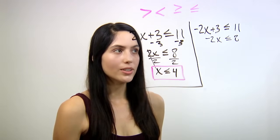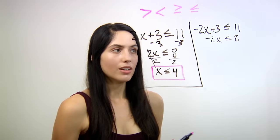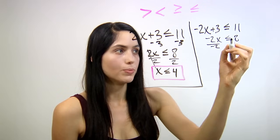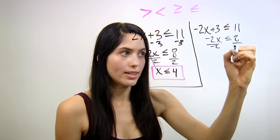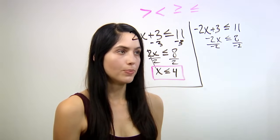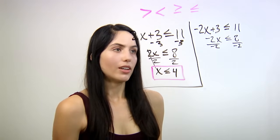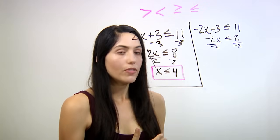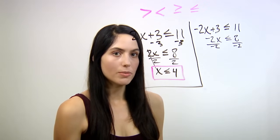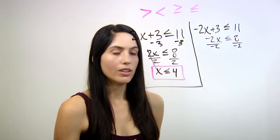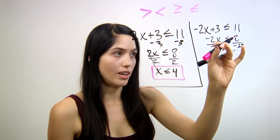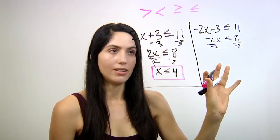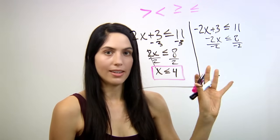Now you are going to divide out to get x alone. So you would divide by negative 2. Divide the right side by negative 2 as well. But here's the trick: in an inequality, if you divide or multiply by a negative number, you have to flip the sign in the middle. You have to flip the direction that your inequality sign faces.